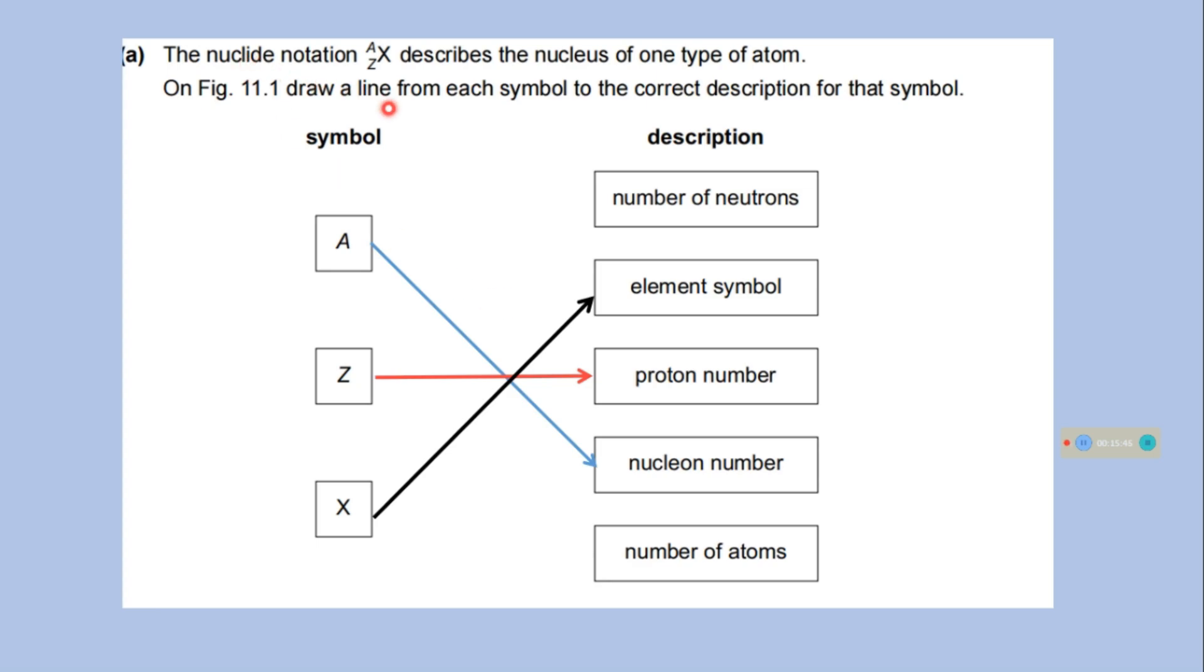The nucleic notation ZXA describes the nucleus of one type of atom. Here A is nucleon number, Z proton number and X is element symbol. A means Z number of protons plus number of neutrons.